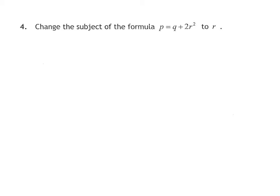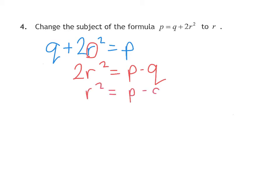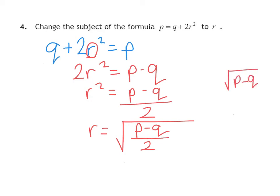Question 4, I change the subject to R. First thing I'm going to do is switch that around so my unknown is on the left-hand side. Your aim is to get R on its own. We deal with the loose term which is Q. Q is positive this side, so that becomes negative on the other side. Then deal with the times by 2. Opposite times by 2 is divide by 2, giving P take away Q all divided by 2. The opposite of squaring is square rooting. Notice how my square root covers the full fraction.